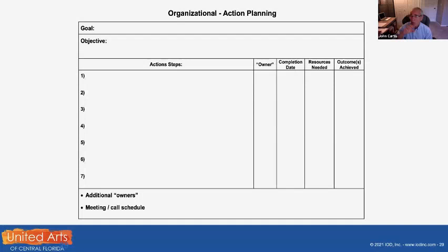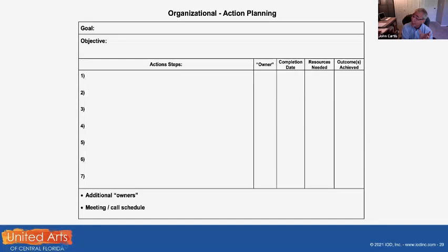This action plan form is for internal use only — the executive director has this in his or her office, and the board chair or head of the planning committee may have it as well. It helps people understand that when dealing with the planning process, we need to get into the details and be very specific. Owner, completion date, resources, and so on. Then last content: planning fails more often than it's successful, I have found. I've been part of that and learned the hard way what not to do. This list of best practices comes from lessons learned over the years.